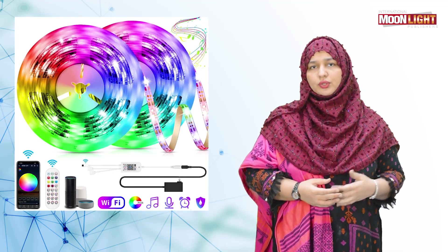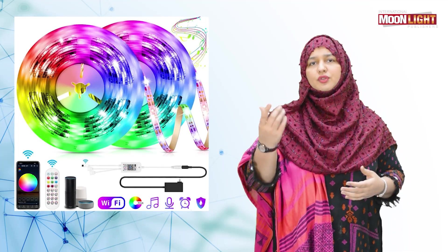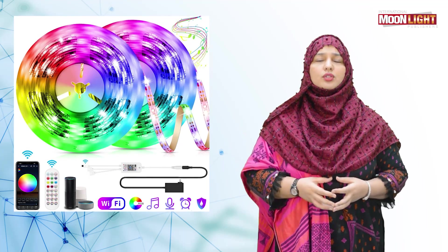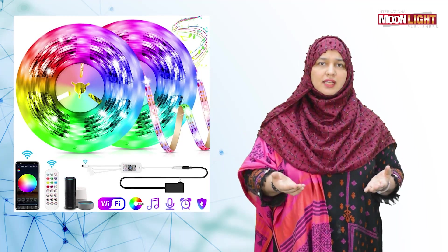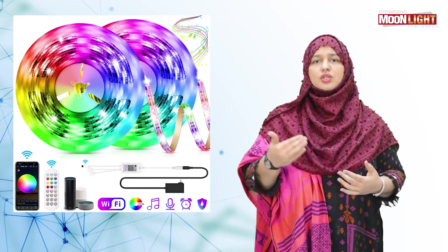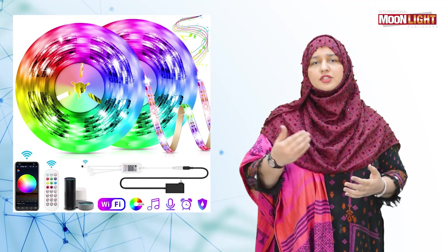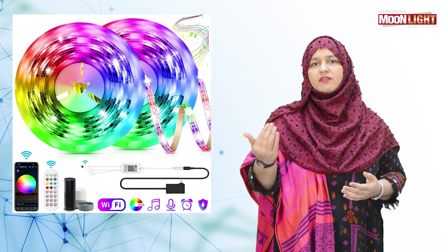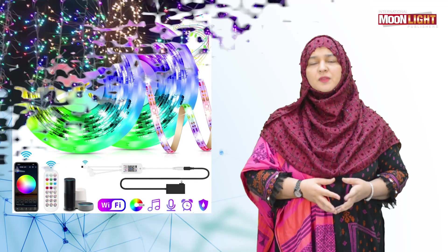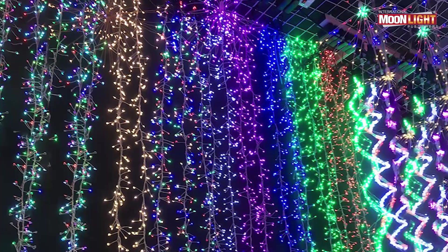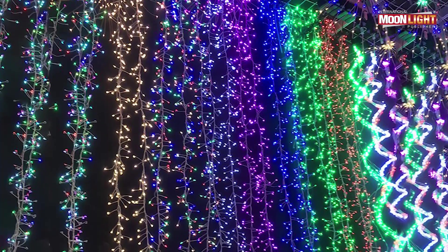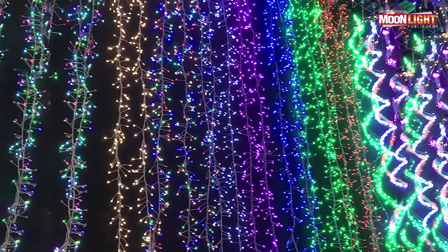Then you will look at the LED light bulb and notice that one wire is long and one wire is short. The longer wire is the positive terminal, while the shorter wire is the negative terminal.